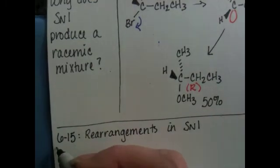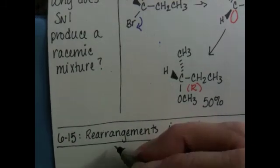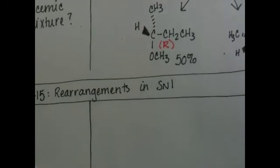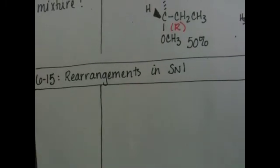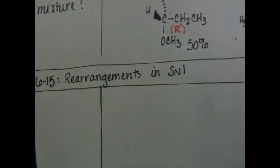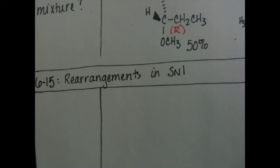In the SN1 mechanism, when the carbocation is formed, it is possible for the carbocation to rearrange itself to make a more stable carbocation. In general, you can take it as a rule that if the carbocation can rearrange itself to make a more stable carbocation, it will always do that.